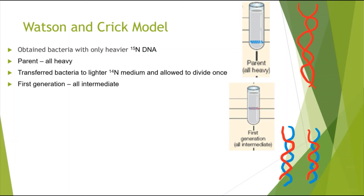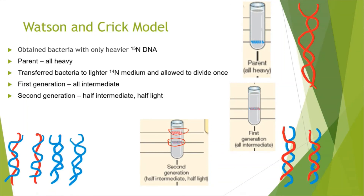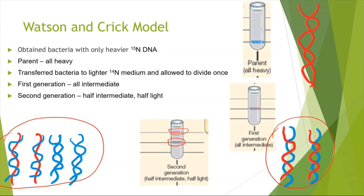In the second generation, when the bacteria were allowed to divide again, the result showed half intermediate density and half light density at the top. This showed that the DNA molecules contained one original strand and one new strand, proving that replication occurred by semi-conservative replication.